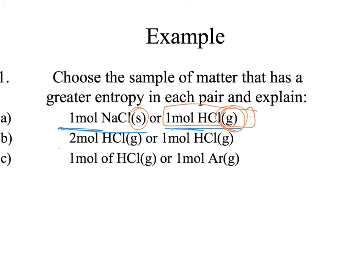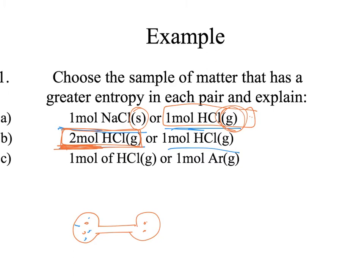The second comparison: two moles of hydrogen chloride gas versus one mole of hydrogen chloride gas. The one with higher entropy will have the more moles of gas, because then you have more potential distributions if you have more molecules. Remember the probability diagram with the four molecules that gave us 16 different places for them to be — if we had even more molecules, we would have even more statistical distributions. So more molecules, more moles means greater entropy, greater potential disorder.